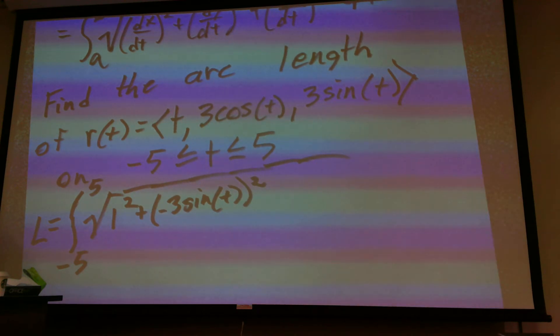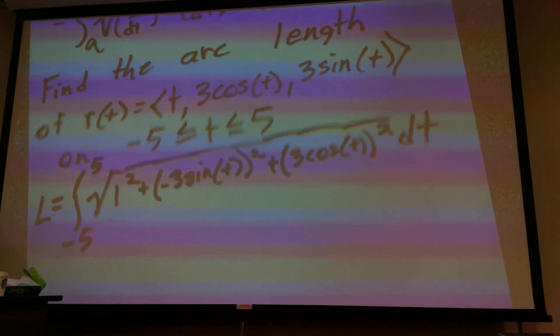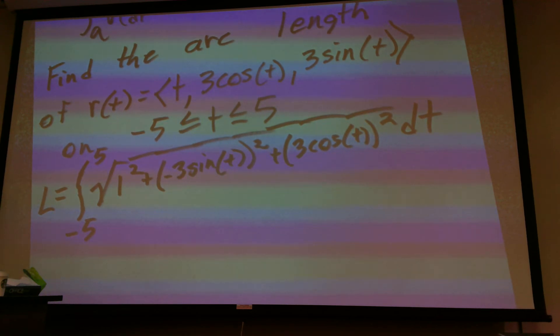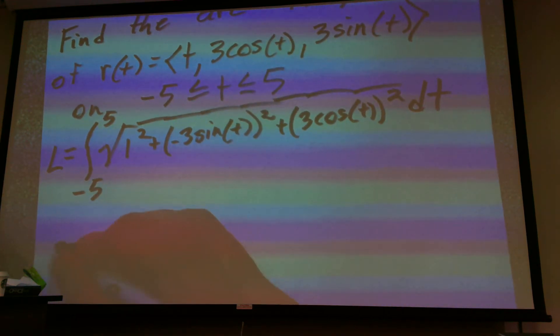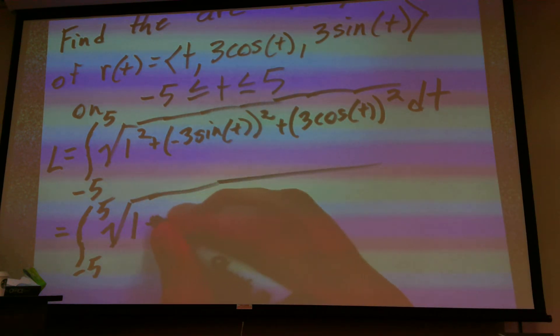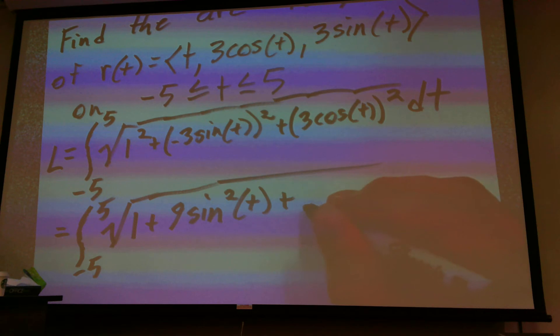And now, the derivative of sine will be cosine. So, plus, now, let's write it like this, three cosine of t squared. So that would be the integral from negative five to five of the square root. That's going to be one plus nine sine squared of t, plus nine times cosine squared of t. And it would be integral with respect to t.